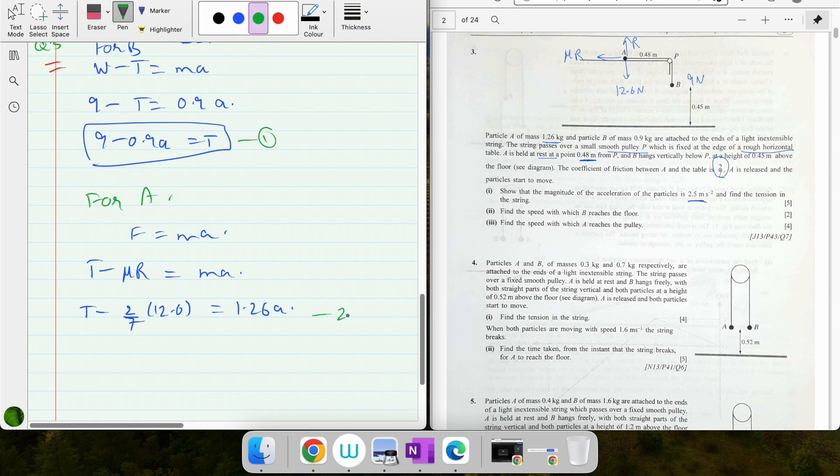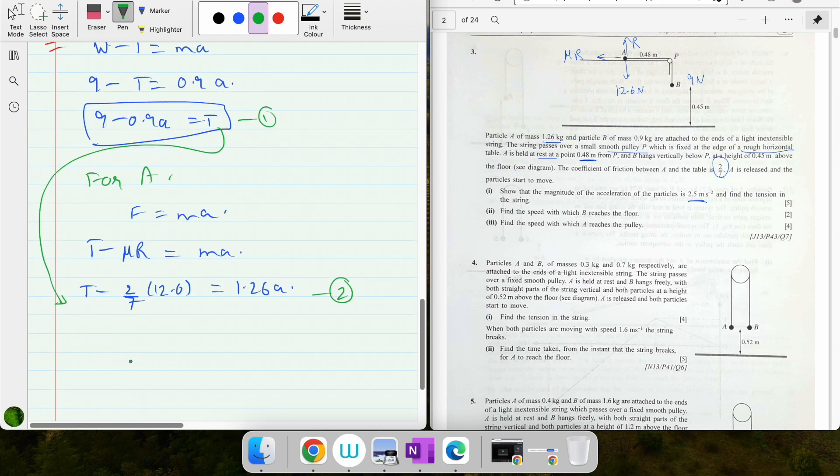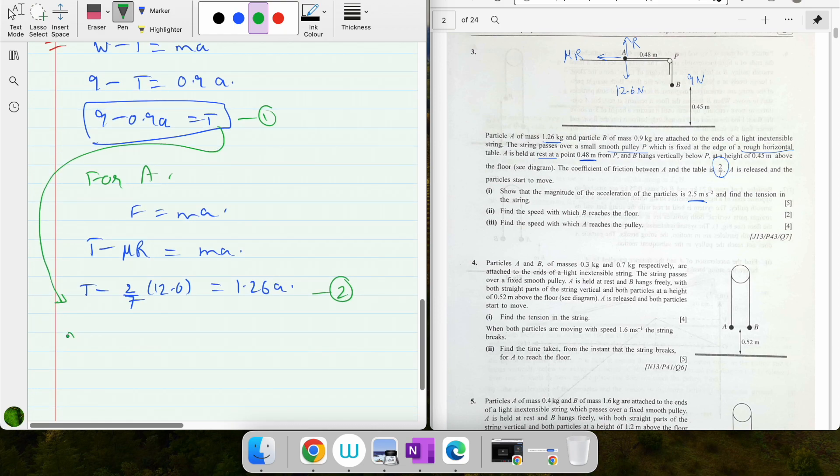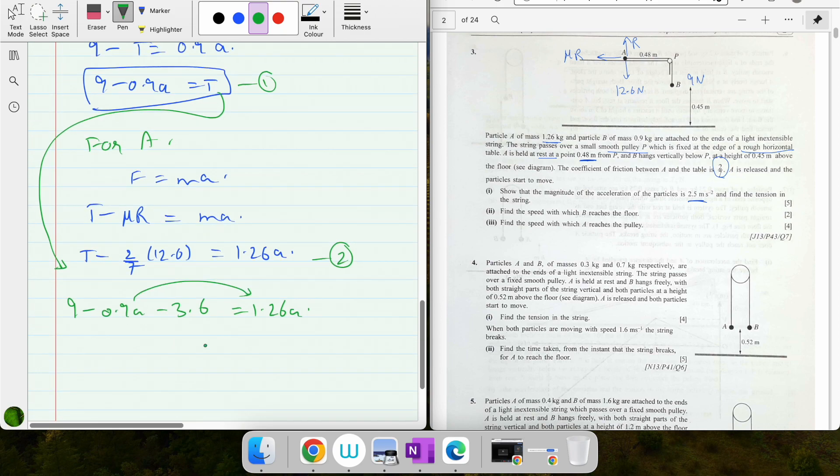This is equation 2. I'm substituting T in this equation, which was 9 minus 0.9a. Simplifying: 2 divided by 7 times 12.6 gives me 18/5 which is 3.6. This equals 1.26a, bringing this a on the other side.